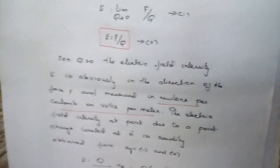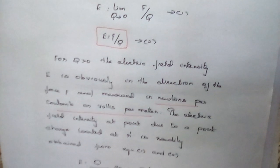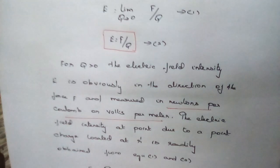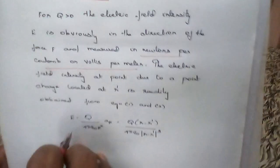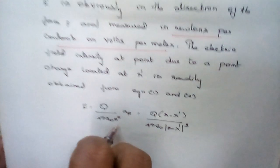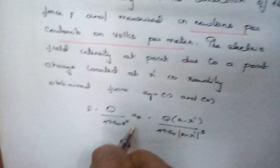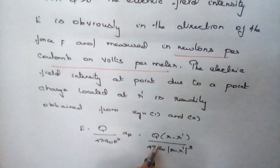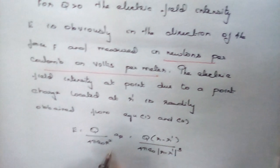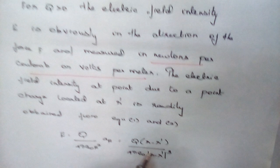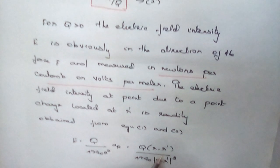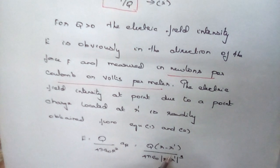The unit of electric field intensity is nothing but volts per meter. The electric field intensity at a point due to a point charge located at distance r is given by E equal to q divided by 4π epsilon-naught r-squared, multiplied by the unit vector r-hat. The charge q is at distance r, and the unit vector is given by the distance between the two points where the charge is displaced, divided by the magnitude.